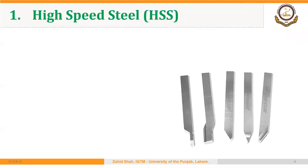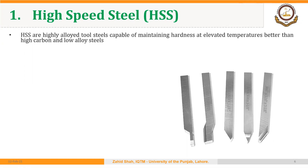First we will discuss High Speed Steel, or HSS for short. HSS are highly alloyed tool steels capable of maintaining hardness at elevated temperatures better than high carbon and low alloy steels. Before HSS were developed, high carbon steel was the most commonly used cutting tool material, but HSS allowed machinists to machine parts at a much higher speed, which is why it was named high speed steel. Apart from higher hardness, HSS also has higher hot hardness.